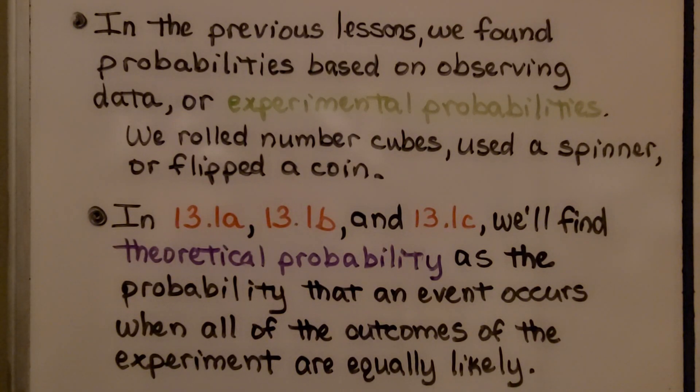In 13.1a, b, and c, we'll find theoretical probability as the probability that an event occurs when all of the outcomes of the experiment are equally likely.